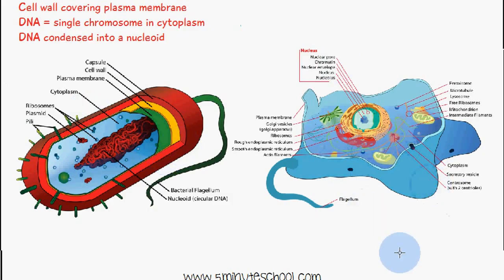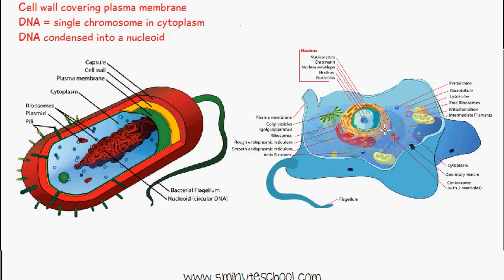Here we have a eukaryotic cell. You can see there are organelles which have their own membrane, so they're closed and boxed off. There's also a nucleus, which is where the genetic information is stored — for example, there's a nucleolus inside it, as well as chromatin.